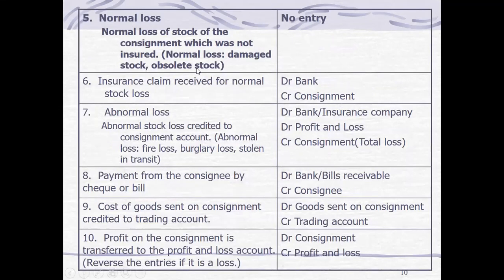Regarding normal loss: if we recall from cost accounting, especially for spoilage or damaged goods, if the loss is within the normal range — meaning whatever we do to protect and prevent inventories from damage, this would still occur — then the normal loss is incidental to the processes we perform in consignment. Therefore, we do not make any entry for that. However, if we insure the goods against loss, we debit cash in bank and credit inventory on consignment account for the insurance claim received.